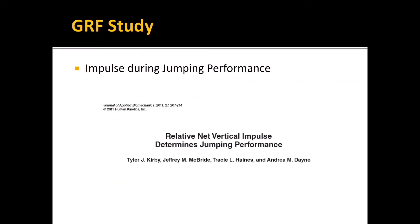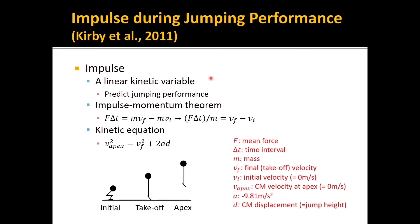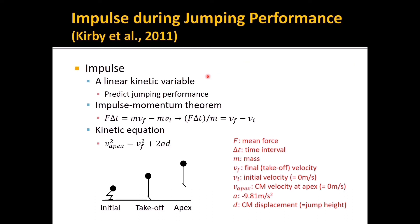Here is the second study, about impulse during jumping performance. The title is: the relative net vertical impulse determines jumping performance. Impulse is defined as the accumulated effects of force exertion over a period of time, and it is a linear kinetic variable. The impulse may better predict jumping performance. Since impulse causes change in momentum, we can use the impulse-momentum theorem: F·ΔT = M·VF - M·VI, where F is mean force, ΔT is time interval, M is mass, VF is final velocity, and VI is initial velocity.